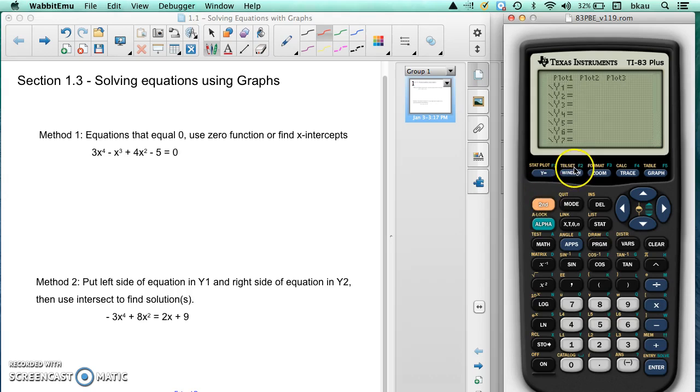So we're going to turn our calculator on, make sure none of the plots are turned on, clear out all the other graphs that are in there. We're going to type this in: 3x to the 4th power minus x to the 3rd power plus 4x to the 2nd power. I'm going to use this key here for x to the 2nd minus 5.